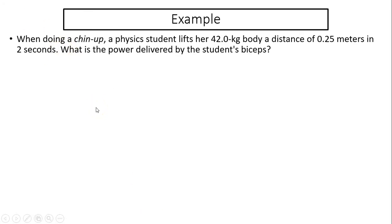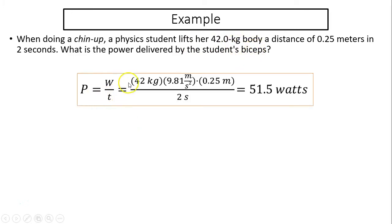Another example. When doing a chin-up, a physics student lifts her 42-kilogram body a distance of 0.25 meters in two seconds. What is the power delivered by the student's bicep? Power equals work divided by time. Now again, for the student to lift her body, the minimum force she has to use is her weight to overcome her weight. So power is the weight times the distance divided by time. So power is 51.5 watts.